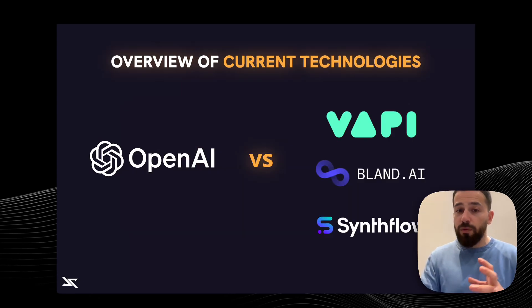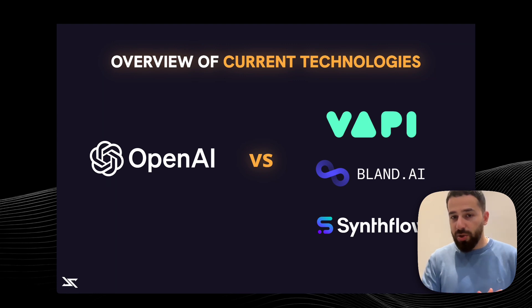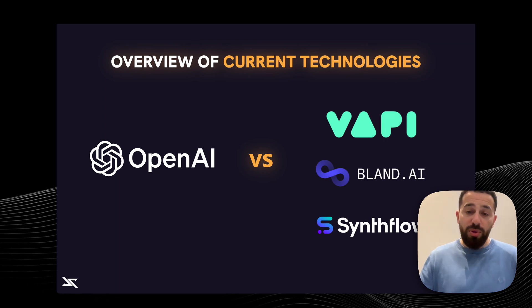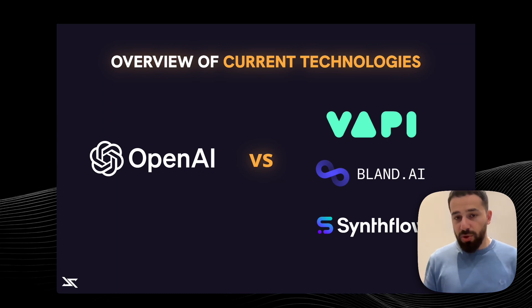First, I want to give you an overview of the different approaches that exist when building AI voice agents so you can see what fits for you, and I'll explain what we picked. There is the OpenAI approach — OpenAI has released their real-time API, which is the state-of-the-art model right now, the most advanced AI voice agent that exists. The problem though is that it's pretty technical to use — you have to completely code the voice agent to make it work. Then there is another approach: using existing low-code platforms such as VAPI, BlendAI, and others.